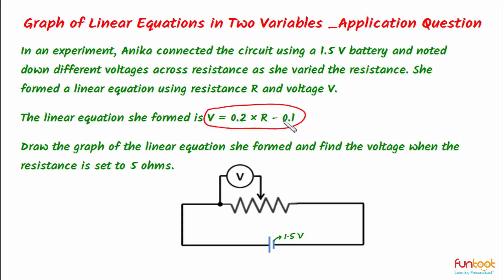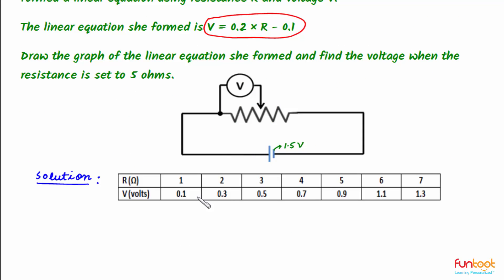Based on this approach, let's complete the solution. These are the values which we have obtained: for putting the value of resistance as 1, 2, 3, 4, 5, 6, 7 in this equation, we found the value of the voltage, that is 0.1, 0.3, 0.5, 0.7, 0.9, 1.1, and 1.3.